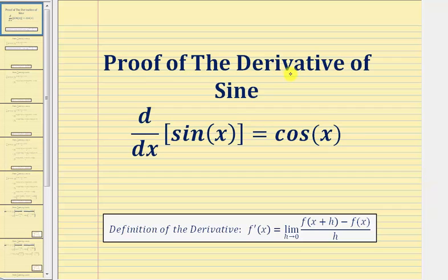Welcome to a proof that the derivative of sine x with respect to x equals cosine x. We'll be using the definition of the derivative shown here below, where f prime of x equals the limit as h approaches zero of the difference quotient.